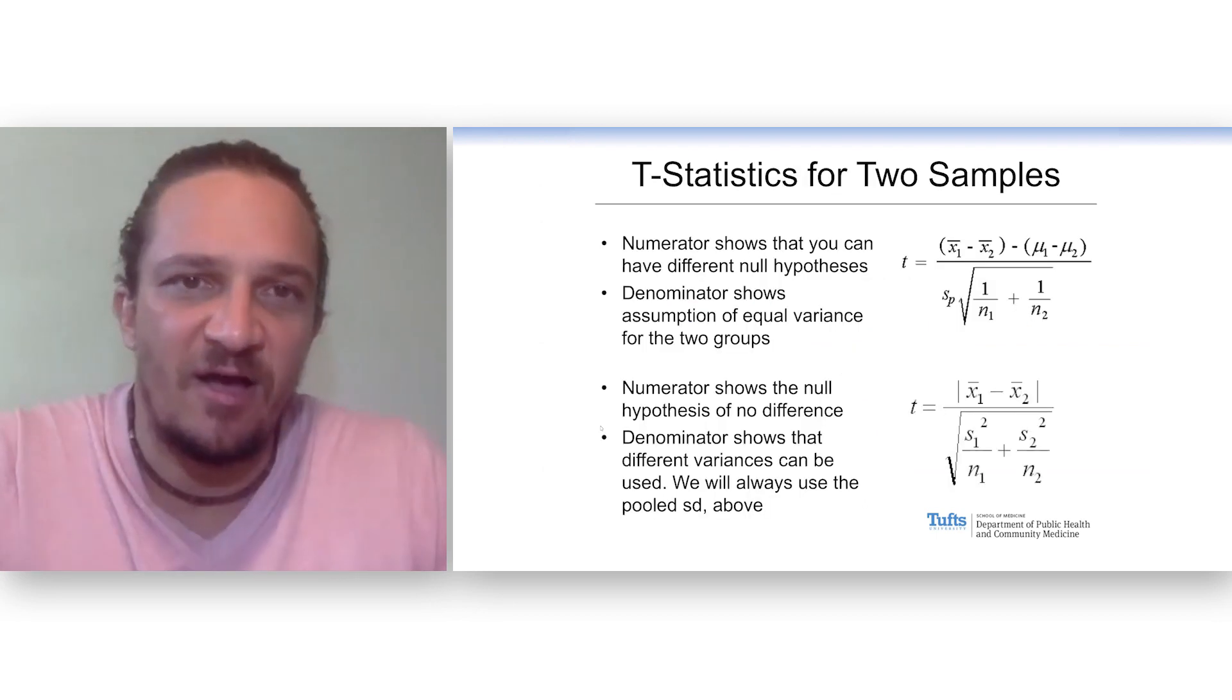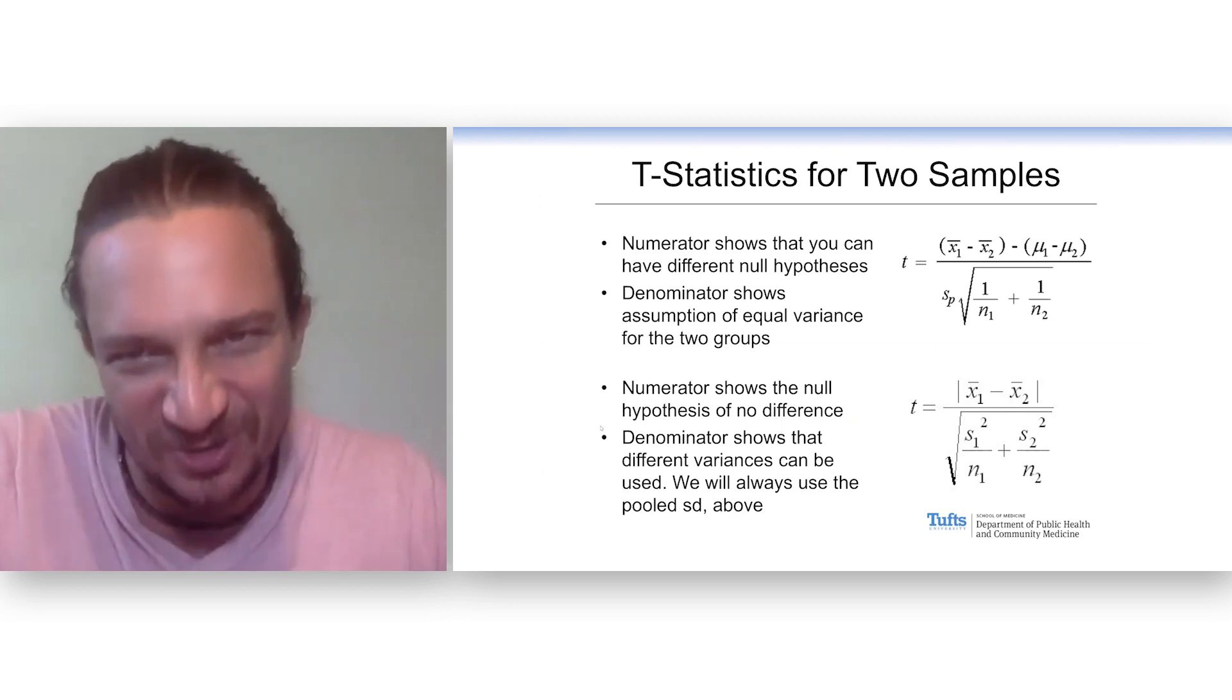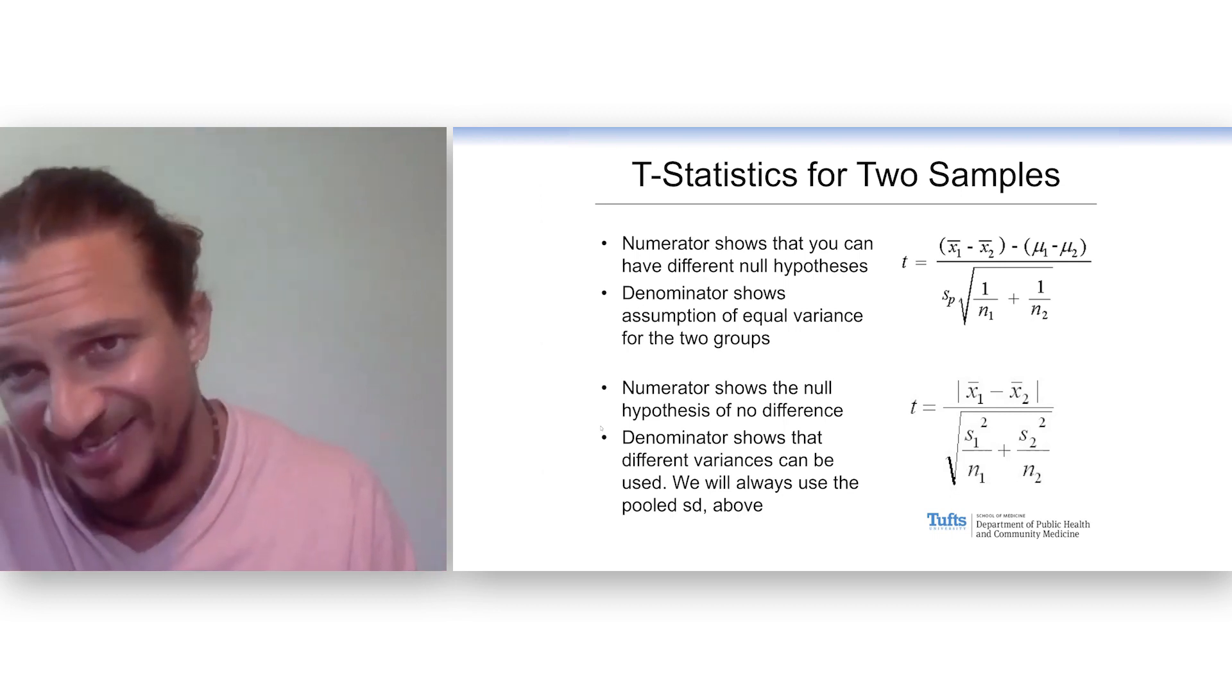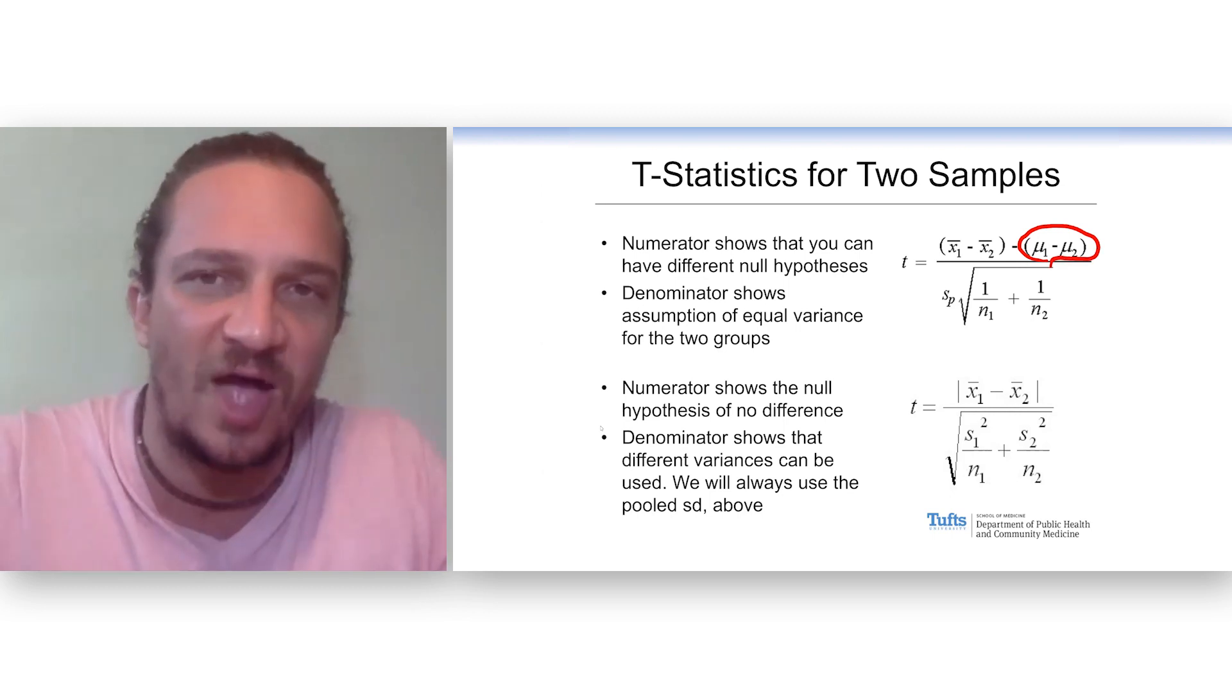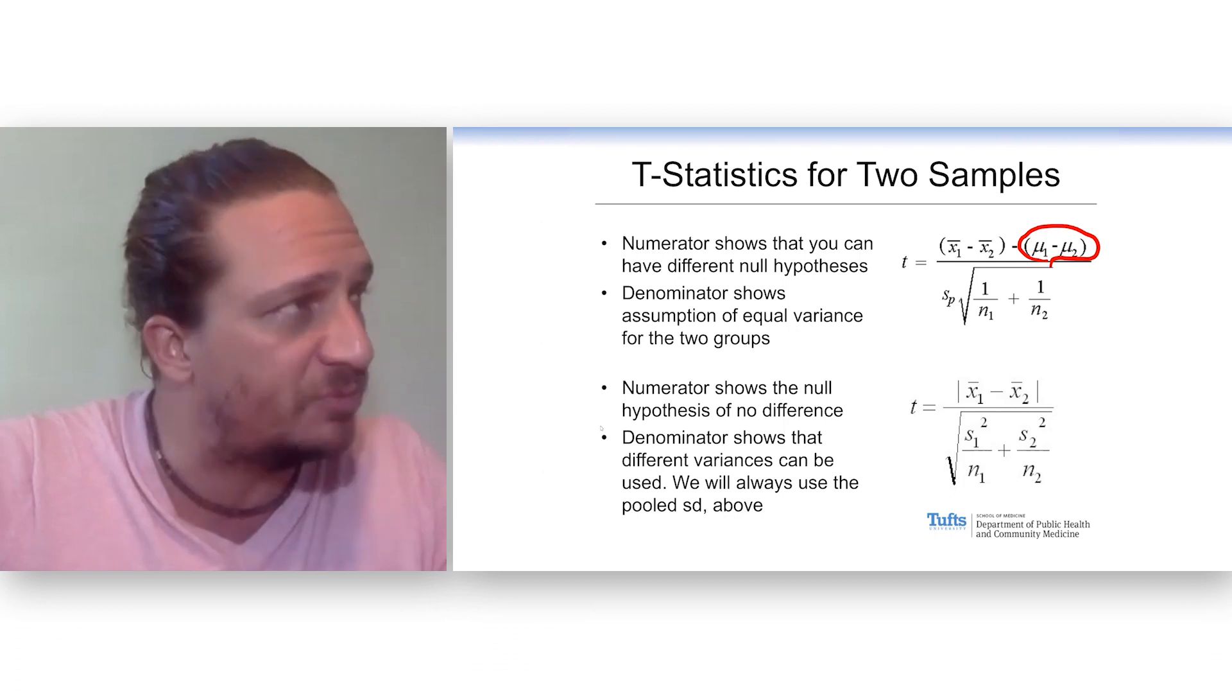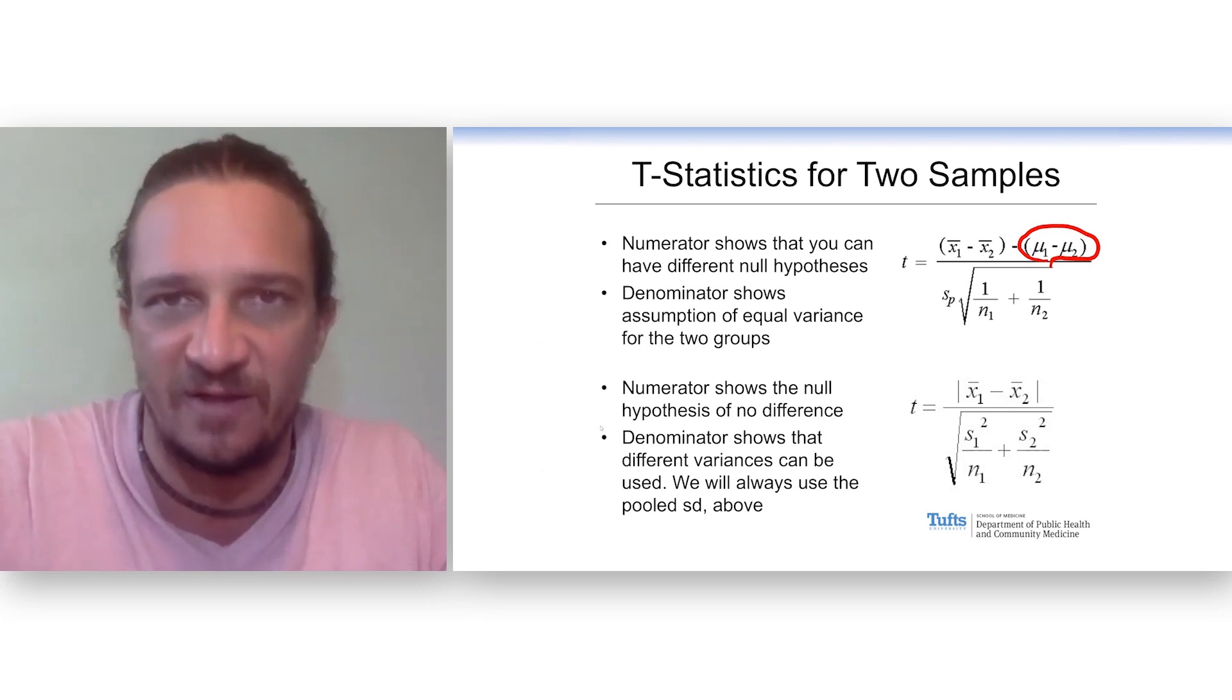A few examples of this, but this shows you that in the numerator, you can have different null hypotheses. Usually we're testing if two means are equal to each other, but sometimes you can choose a different null hypothesis. Maybe you might say that the standard treatment lowers blood pressure by 10 points, and I want to test and see if my thing is better than 10 points. You can plug that into the numerator.